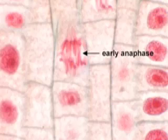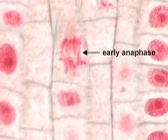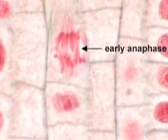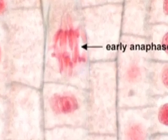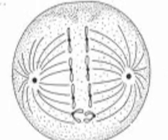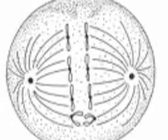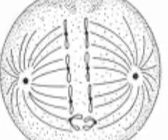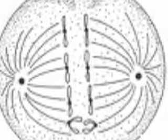In the third stage, anaphase, sister chromatids are pulled to opposite poles. Mitosis cell division is the process of sorting and distributing the chromosomes to form new nuclei.